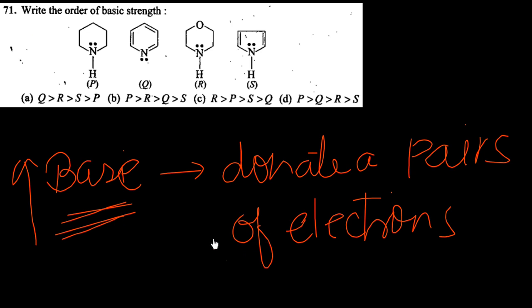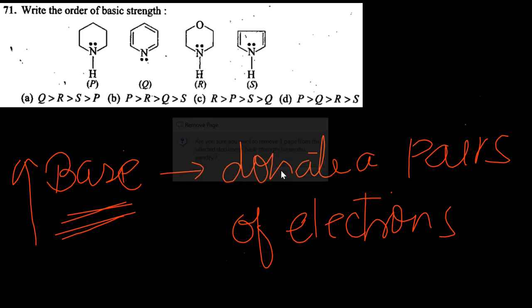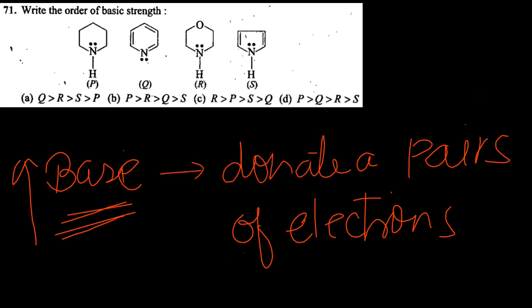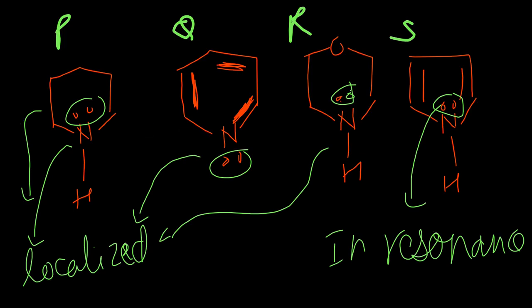Students, note that a base is something which can donate a pair of electrons. So the more easily a species can donate its electrons, the better base it is. And the more difficult it is to donate electrons, the weaker the base.